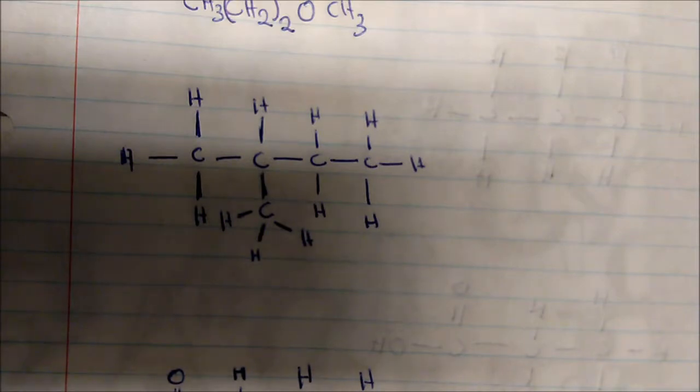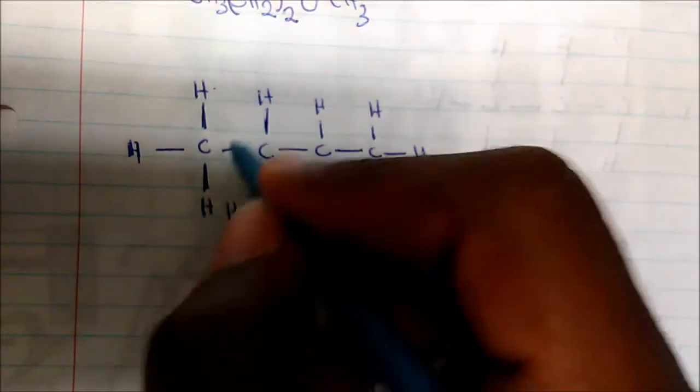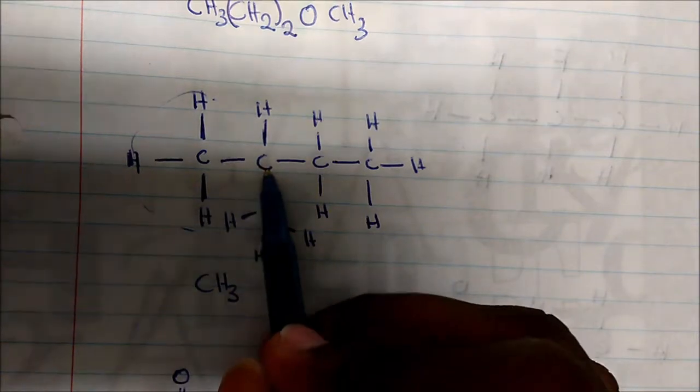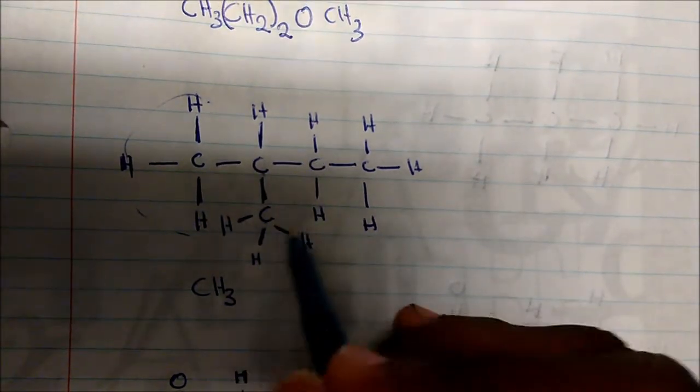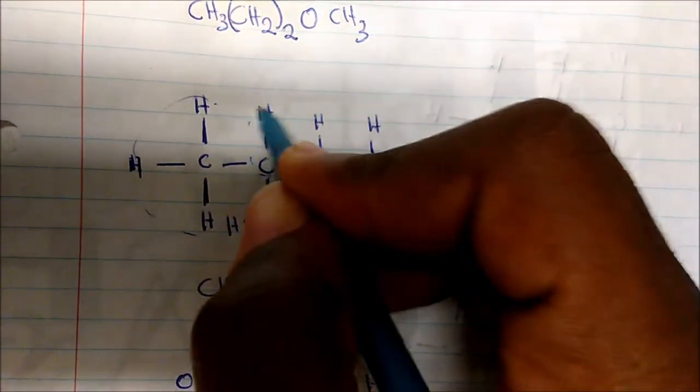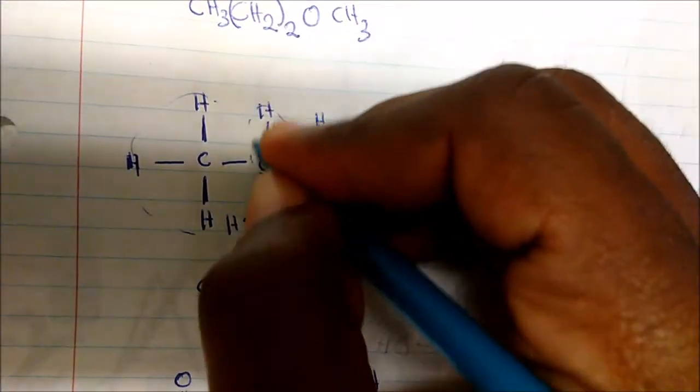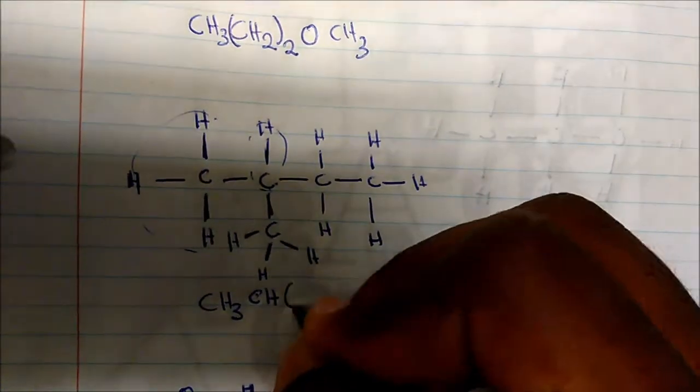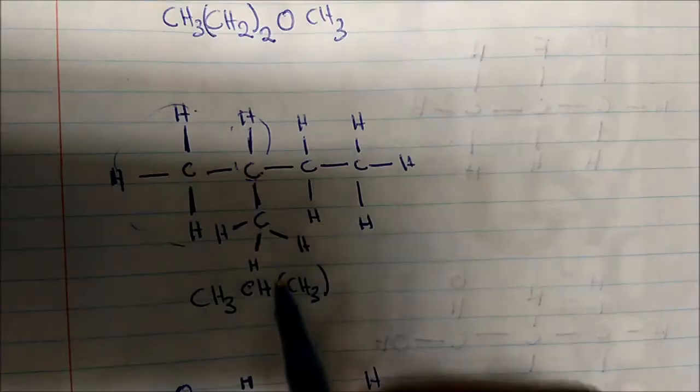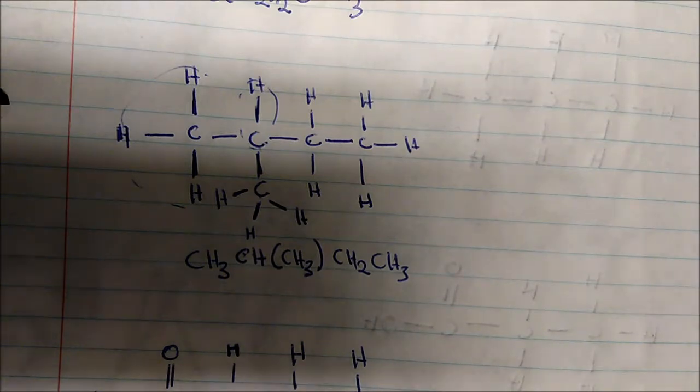Looking at this next molecule, I see a CH3 group here. Now I have a carbon that has another carbon branched off it. Anytime you see something that's branched, we put it in parentheses — that's the general consensus. So I write CH, then put the branched CH3 in parentheses, followed by CH2 and CH3. So this is the condensed structure for this molecule.